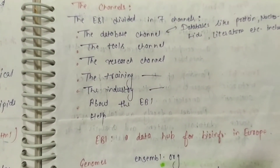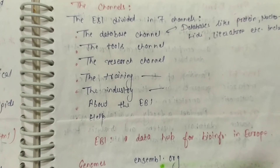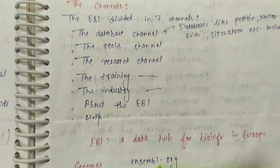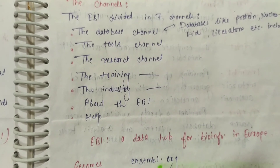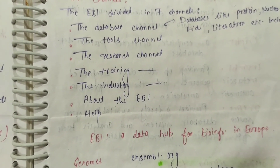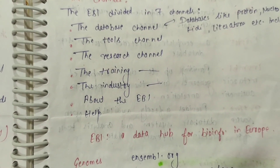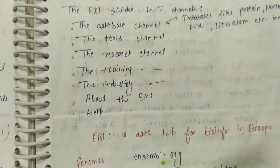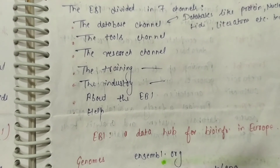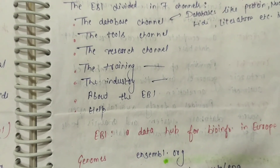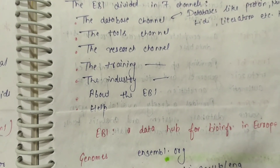EBI is divided into 7 channels: database channel, tool channel, research channel, training channel, industry channel, and help. Thank you.